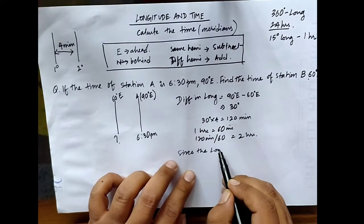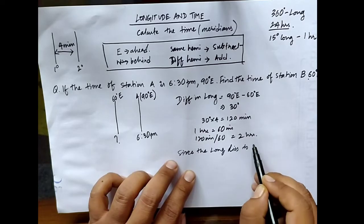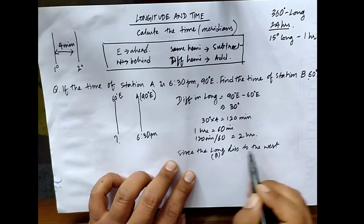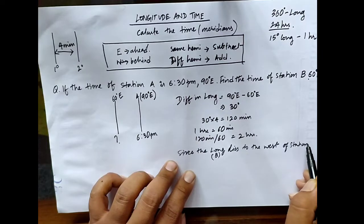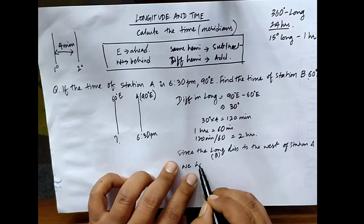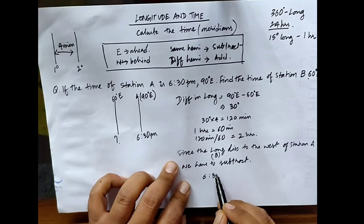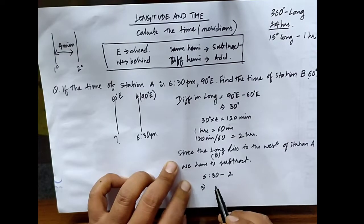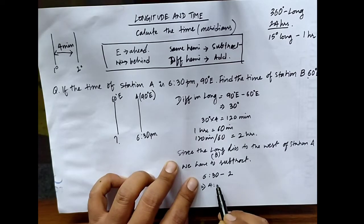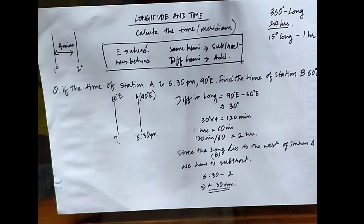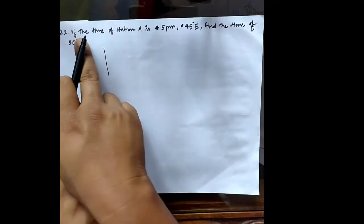Since station B lies towards the west of station A, we subtract the time. The time of station A is 6:30 p.m. minus the time difference of 2 hours, which gives us 4:30 p.m. So the time at 60 degrees east is 4:30 p.m.